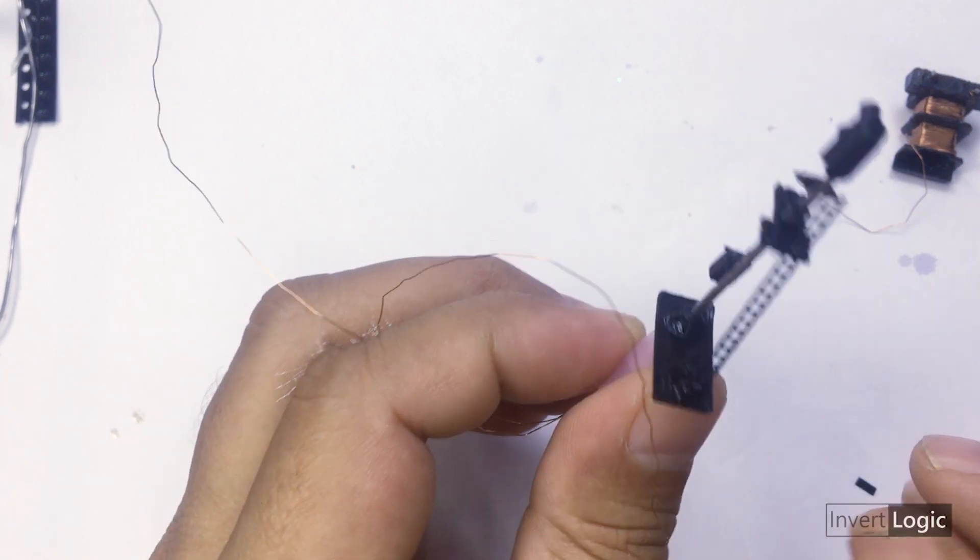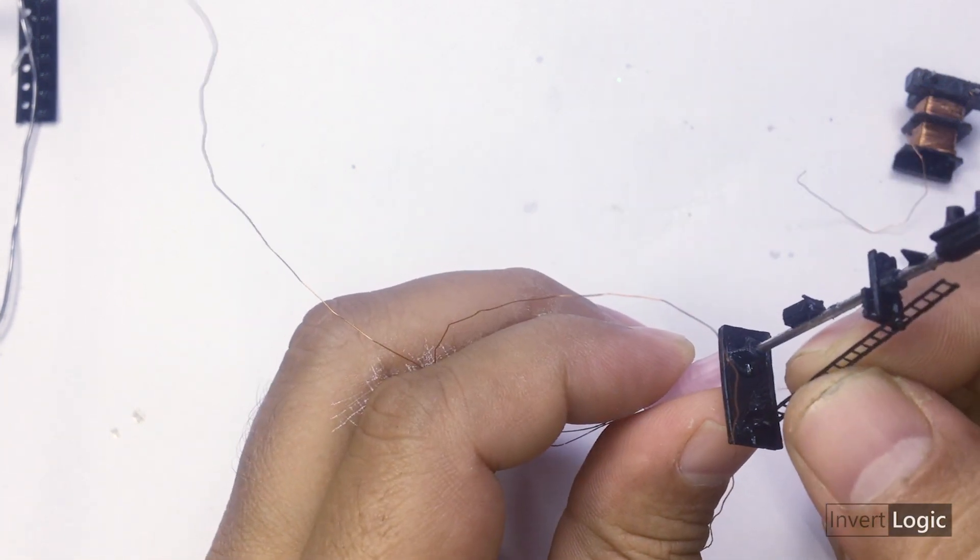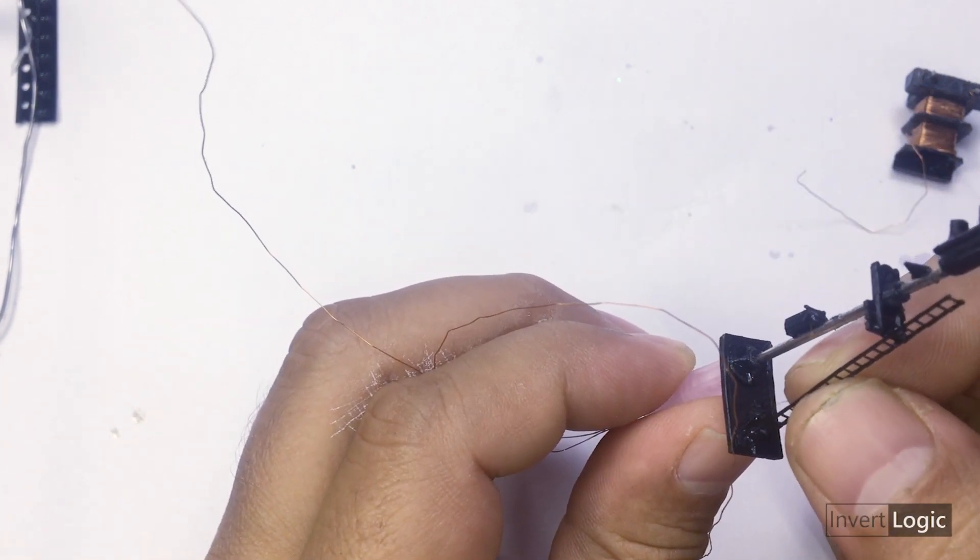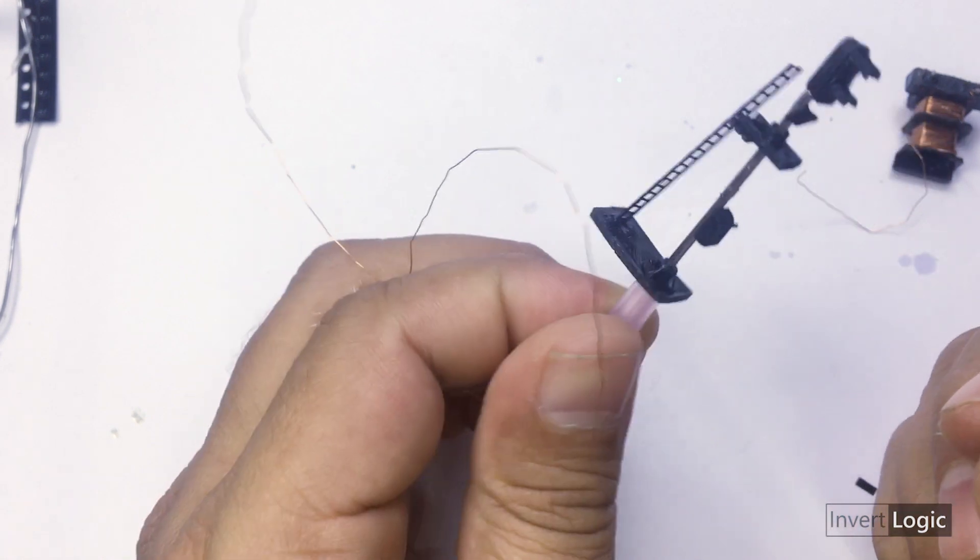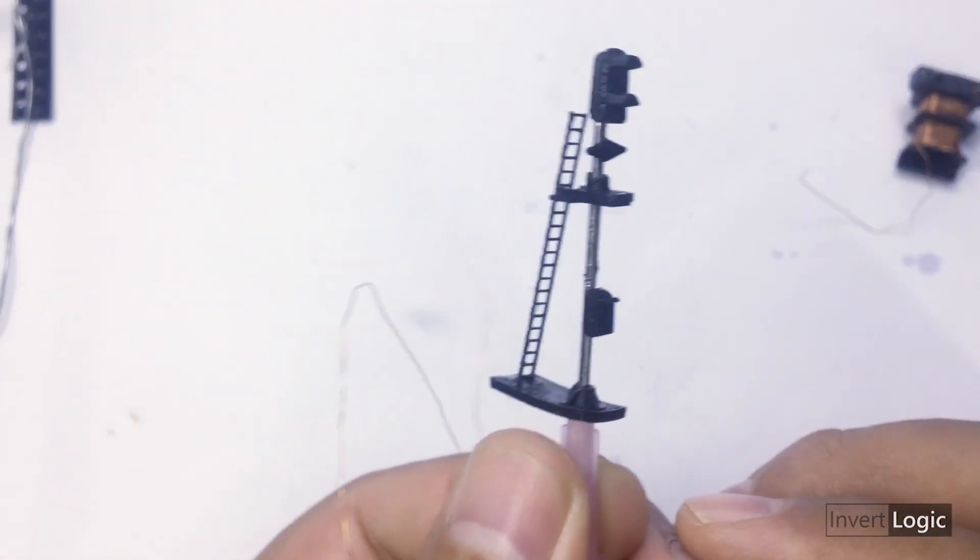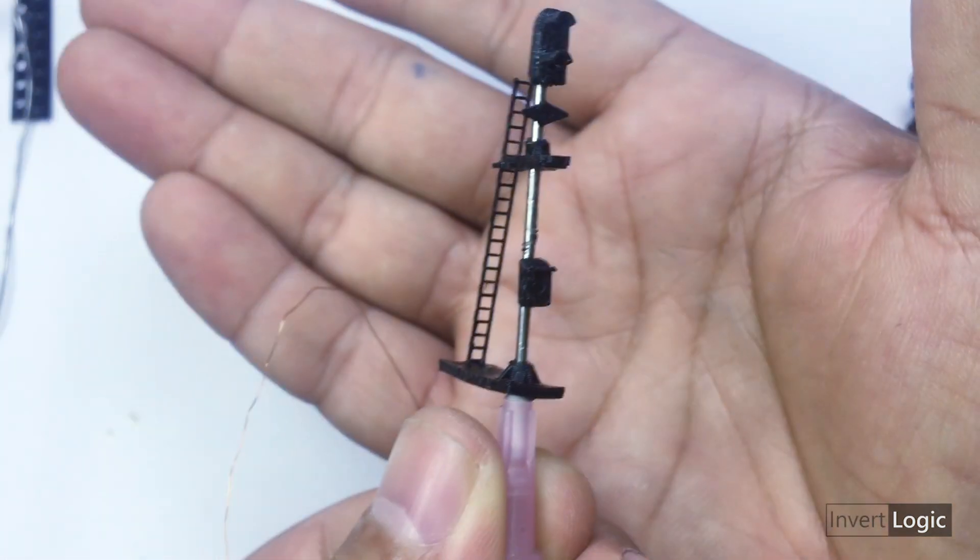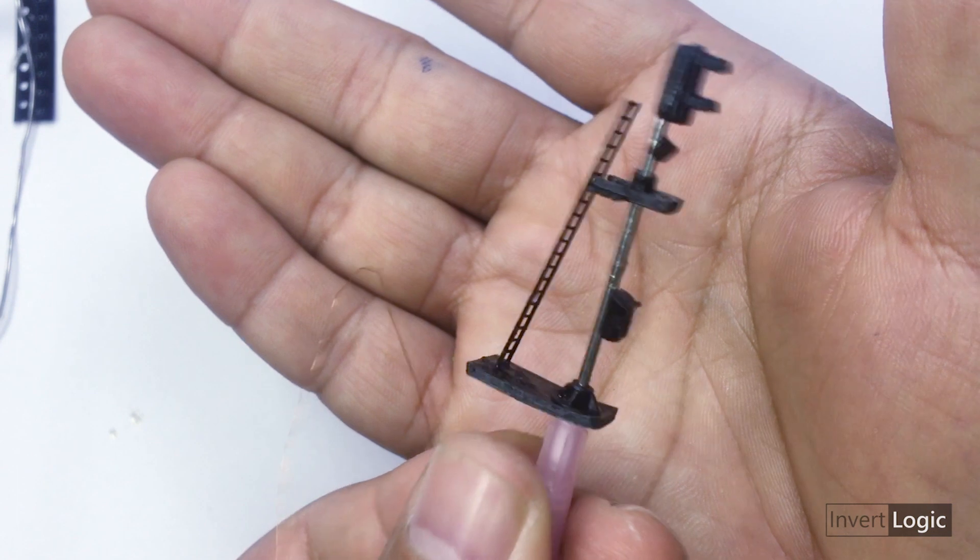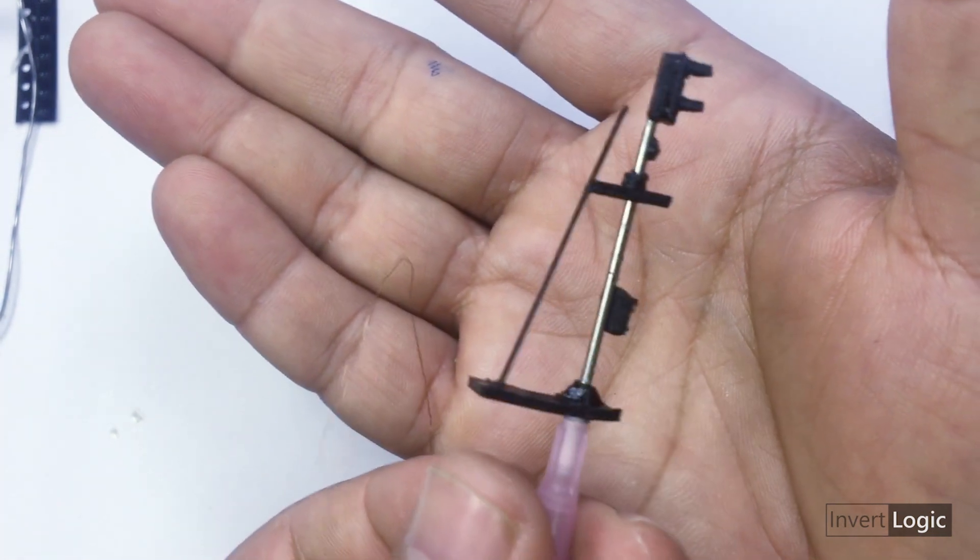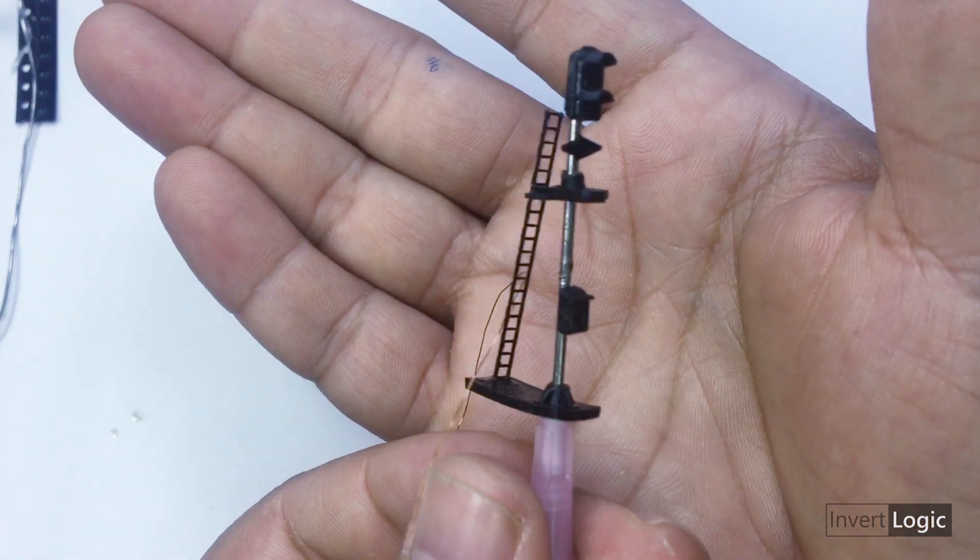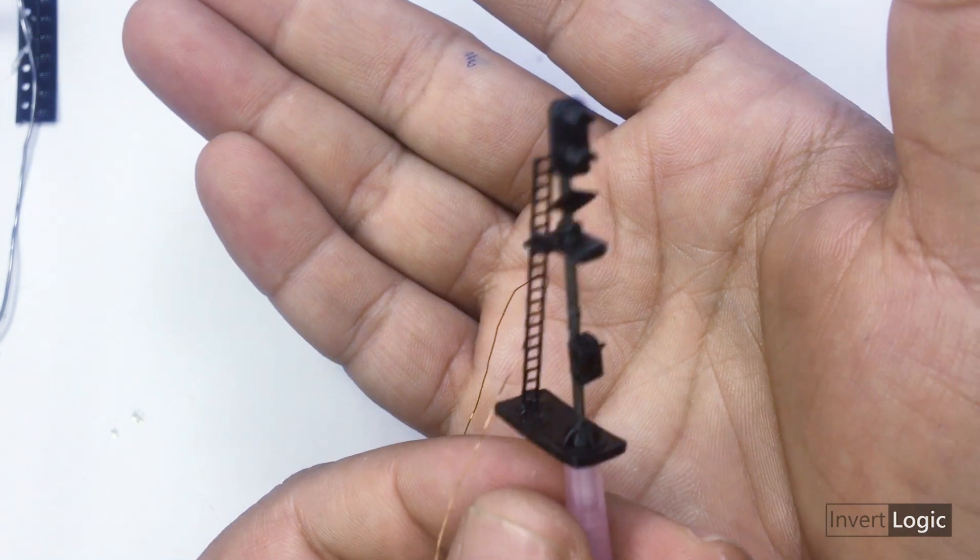So once we have all these connections and all the parts stuck together, you can see now how it looks. It already looks pretty nice and detailed. It doesn't just look like a pole with the signal, but it looks a little bit detailed.